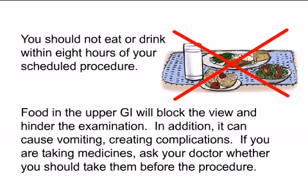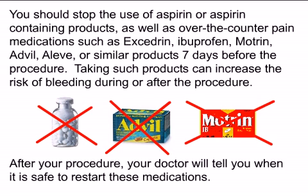Food in the upper GI will block the view and hinder the examination. In addition, it can cause vomiting, creating complications. If you are taking medicines, ask your doctor whether you should take them before the procedure. You should stop the use of aspirin or aspirin-containing products, as well as over-the-counter pain medications such as Excedrin, Ibuprofen, Motrin, Advil, Aleve, or similar products, seven days before the procedure, as these can increase the risk of bleeding. After your procedure, your doctor will tell you when it is safe to restart these medications.